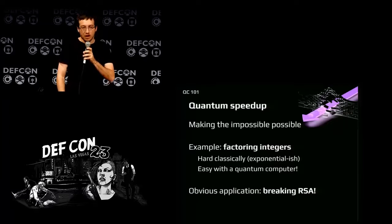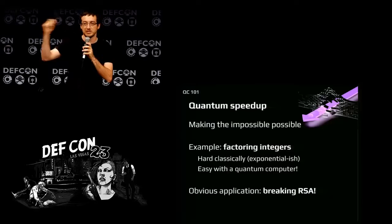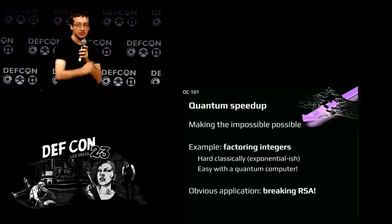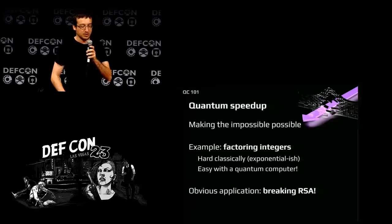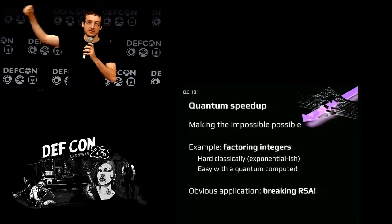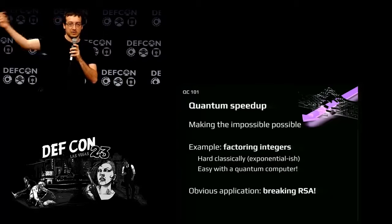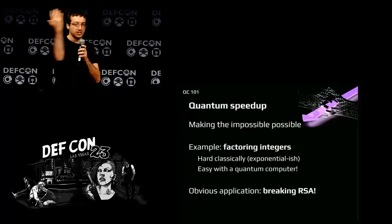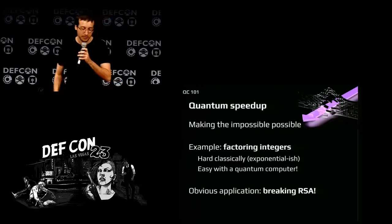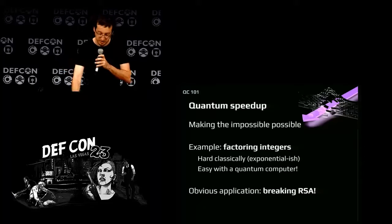The good news is that there are some quantum speed-ups for specific cases — making the impossible possible on a quantum computer. The poster child is the factoring problem: given N equal to P times Q, going from N to its factors is difficult on a normal computer but easy on a quantum one. The obvious application is breaking RSA, which I'll talk about later.